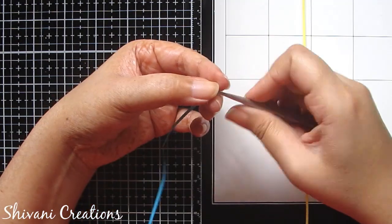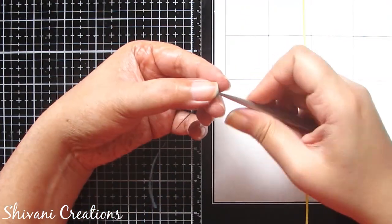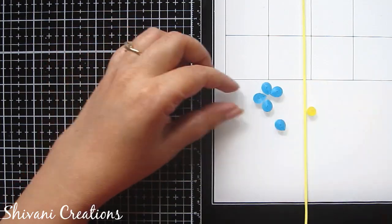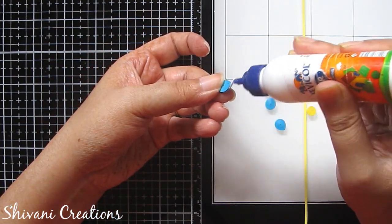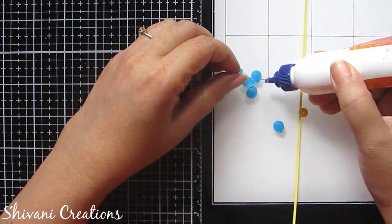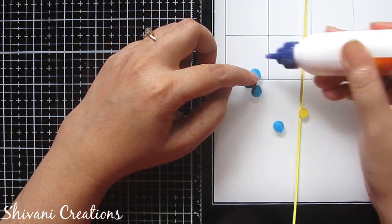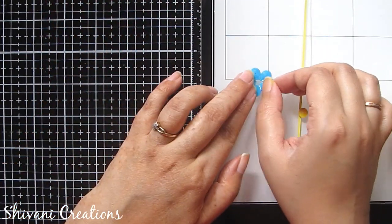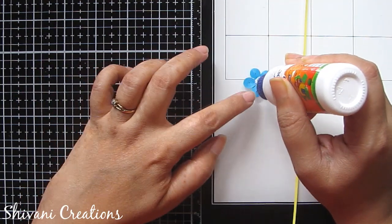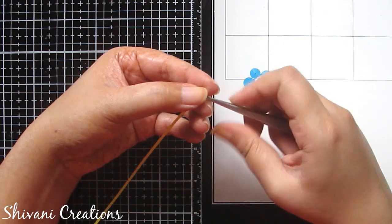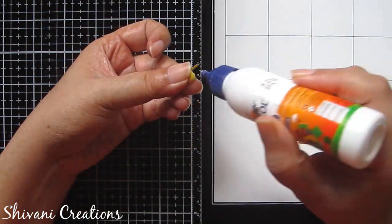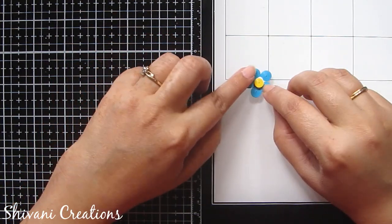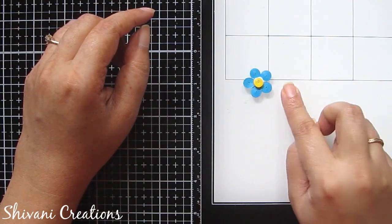Then for the third flower I am taking one strip of blue color and I am making one tight teardrop shape. And then I will join five petals to create the flower. Then for the center of the flower I am taking one strip of yellow color and making one tight coil, just add in the center, and after drying add one more tight coil on other side of the flower.